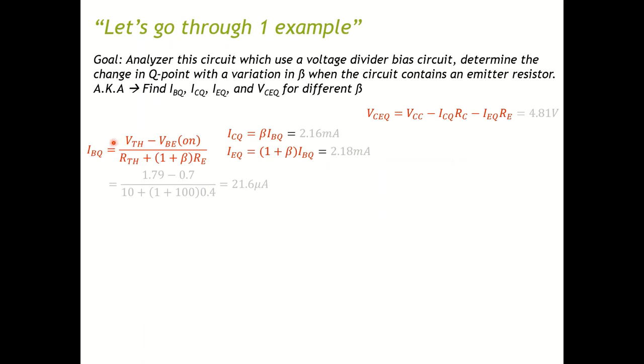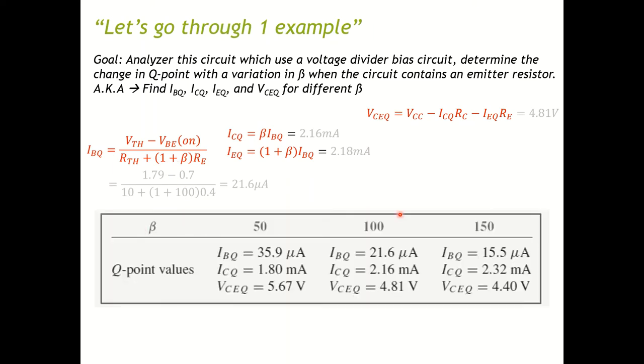Keep all of the important equations there, ignore all of the numbers. Now we're trying to plug in with different β. We did that with β equal 100. Now if you change that to β equal 50, β equal 150, you have this table here.